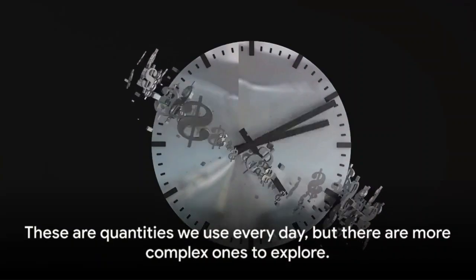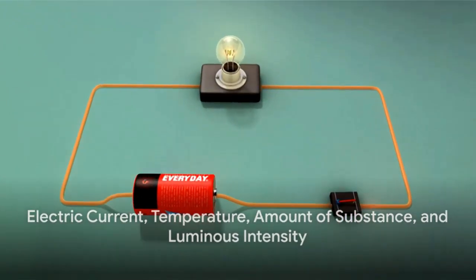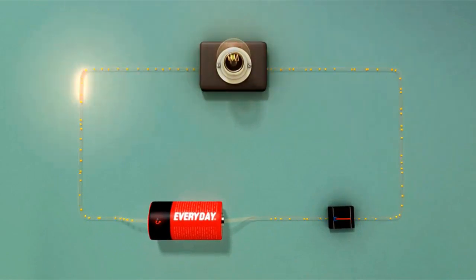These are quantities we use every day, but there are more complex ones to explore. Moving on to electric current, which is the flow of electric charge, measured in amperes. Think of it like a river, but instead of water, it's electrons flowing.